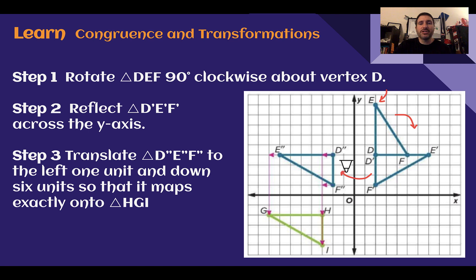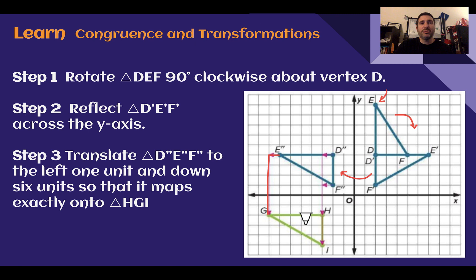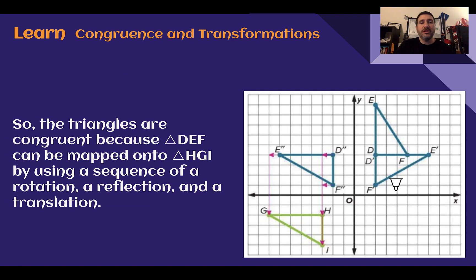Next, if I reflect that image over the Y axis, I can get a second image as indicated by my double prime symbols. Now it looks like I have the same shape in the same positioning. What I would need to do is translate it one over and six units down. If I do that, my final image ends up being the exact same size and shape as my pre-image. So the triangles are congruent because triangle DEF can be mapped exactly onto triangle HGI using a rotation, a reflection, and a translation. It does not have to use all three — any combination will work to show congruence.